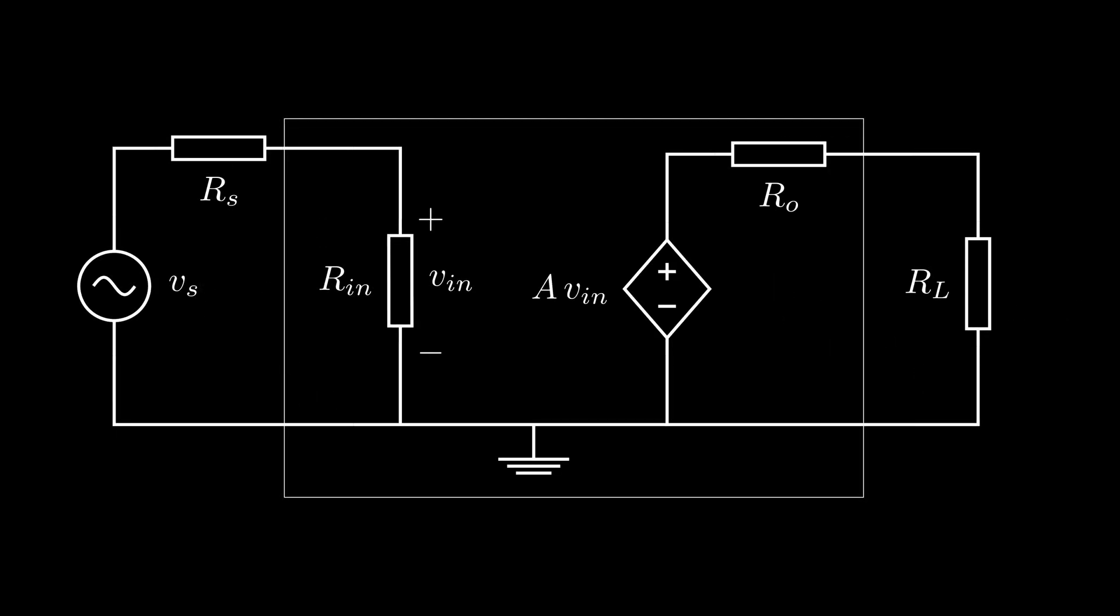Practically, we use devices like BJTs and MOSFETs to realize these amplifiers and all such practical devices have an input impedance and an output impedance.